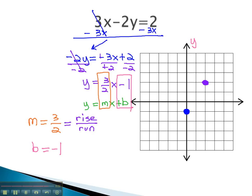By connecting the dots, we will end up with the graph of our line. This is the line that is represented by the equation 3x minus 2y equals 2.